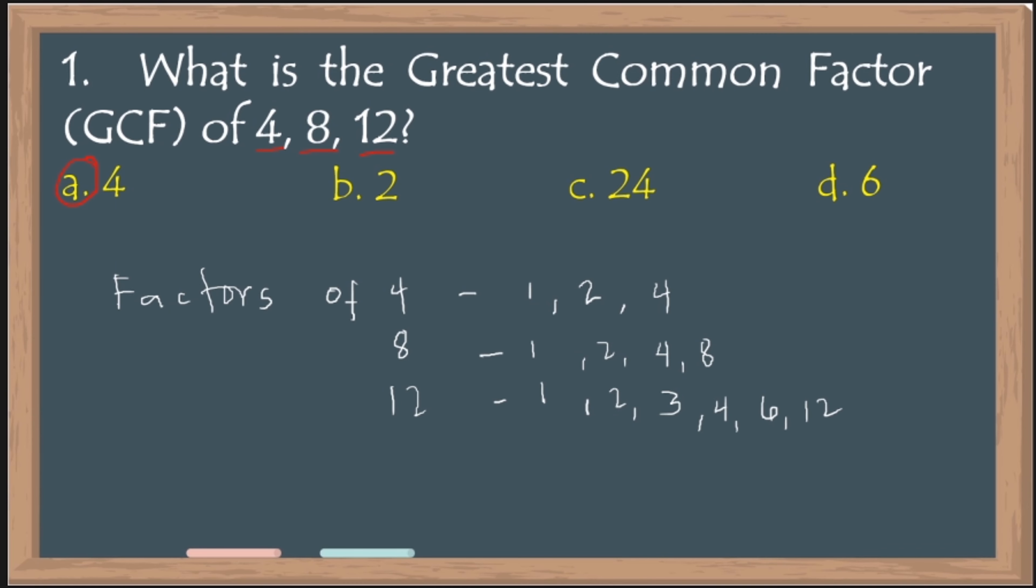And then, factors naman ng 12 ay ano yung mga number, pwede nating i-divide sa 12 na ang sagot ay whole number. That's 1, 2, 3, 4, 6, 12. So, kung mapapansin nyo, yung 1 is common. 2 is also common. Ano pa ba ang pinakamalaking common? That is 4. So, that is how to find the greatest common factor.